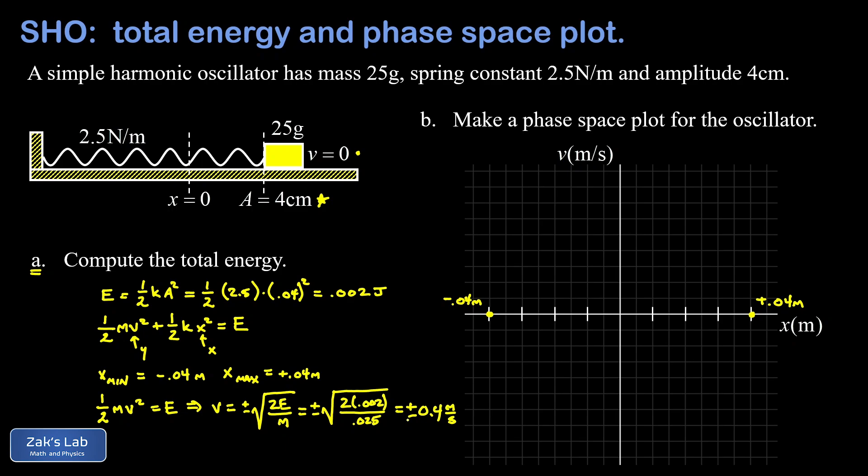Again, these max and min values for the velocity occur when x is equal to zero, so we're going to get two points on the v axis of the phase space plot. This time we'll scale it so that every tick mark on the v axis counts as 0.1 meters per second, and I end up with this extreme positive value of v of positive 0.4 meters per second and an extreme negative value of v of negative 0.4 meters per second.